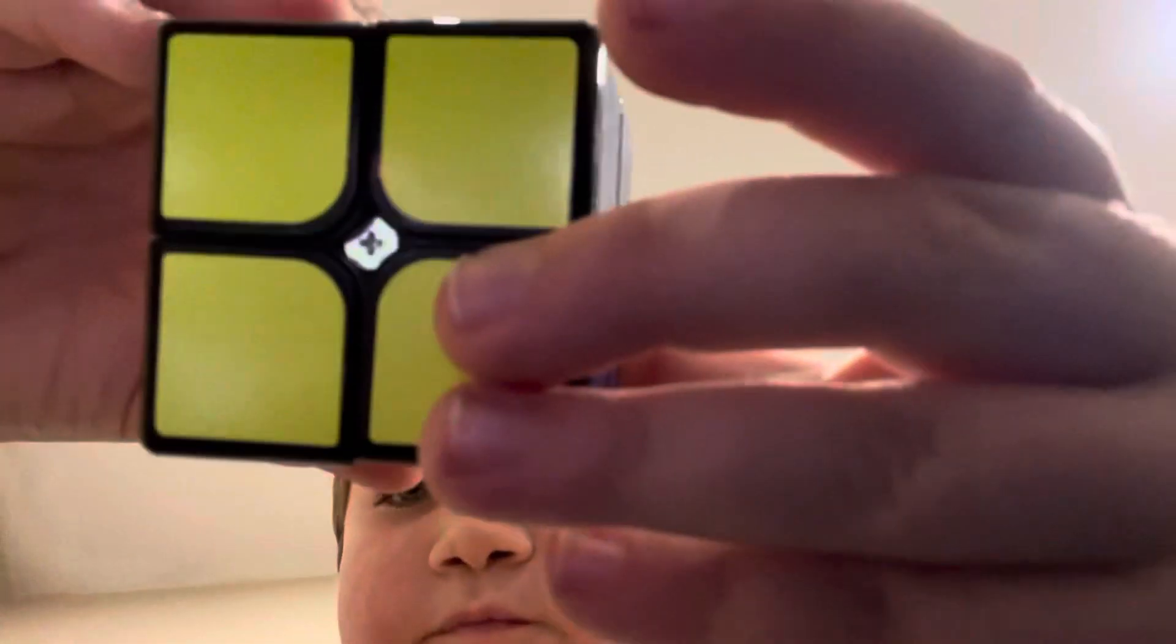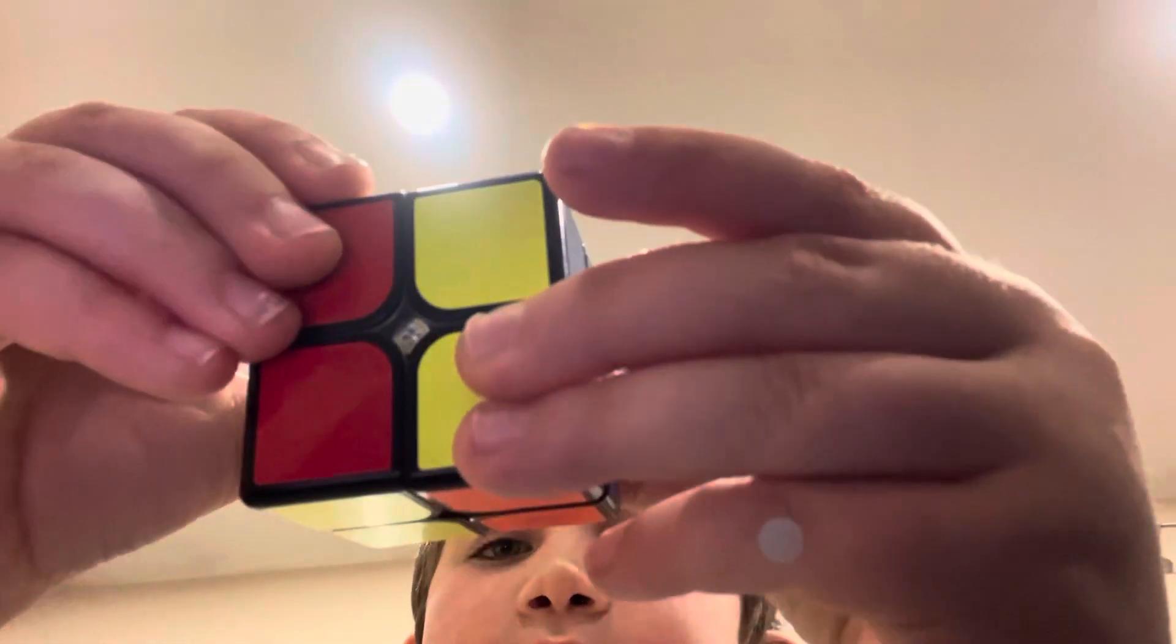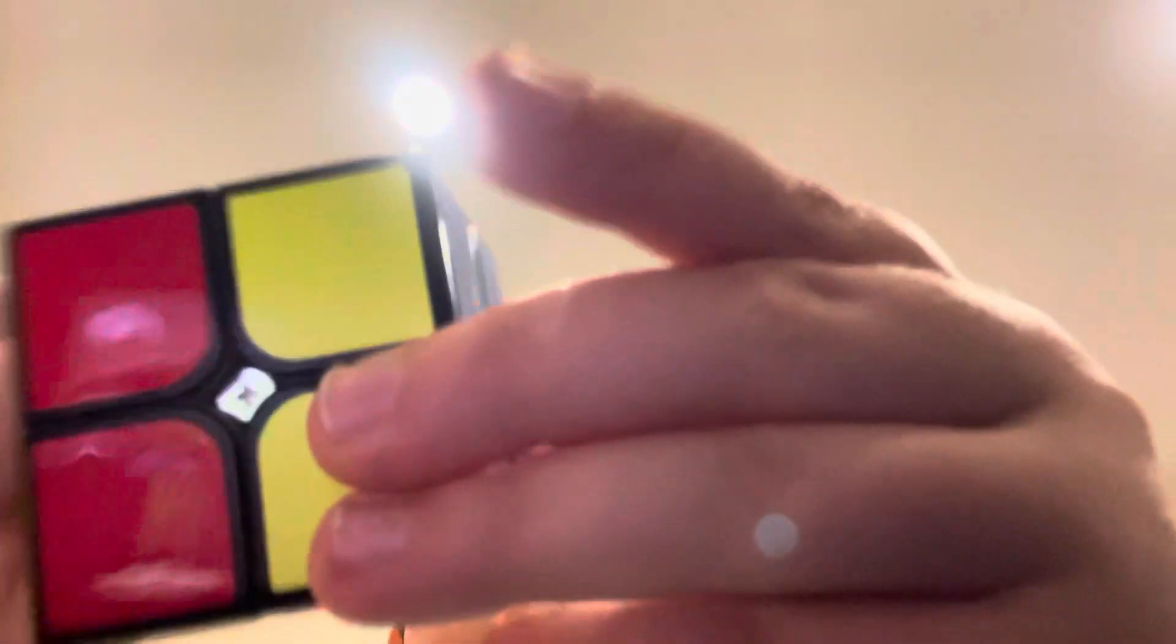First, let's do the 2x2 from the solved state. So first you move the right layer up. Then you move the top layer.